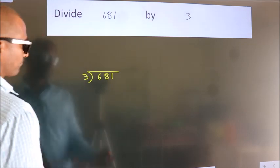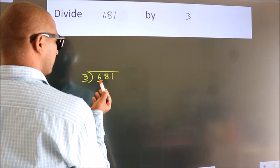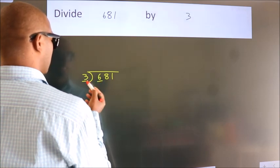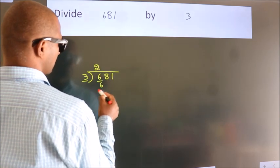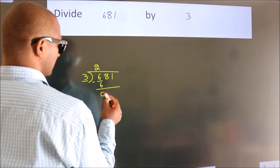Next, here we have 6, here 3. When do we get 6 in the 3 table? 3 times 2 is 6. Now we should subtract. We get 0.